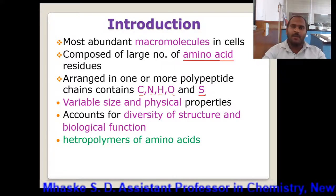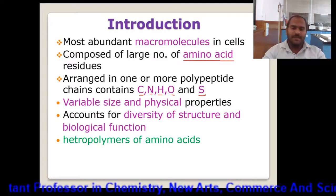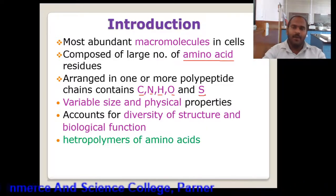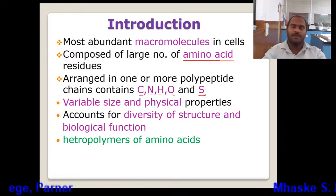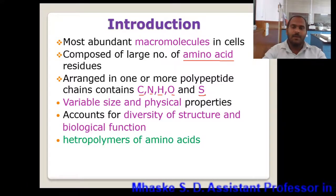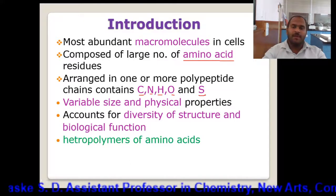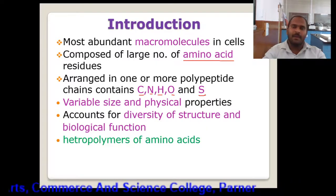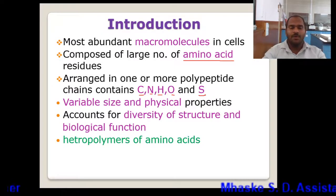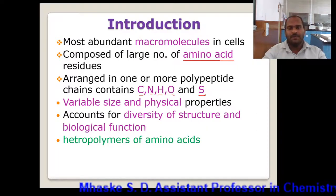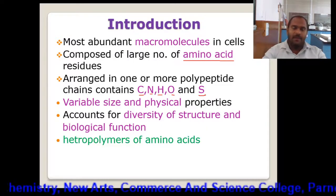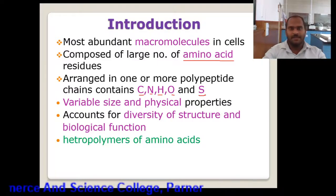These proteins are having variable size and physical properties. They sometimes have only a polypeptide chain, and along with the polypeptide chain there are certain other groups also present. So we can consider that a protein consists of carbon, nitrogen, oxygen, and sulfur, which are the atoms from the amino acid. Along with that it can have other types of groups attached, or sometimes ions are also present. So they account for the diversity of structure and biological functions.